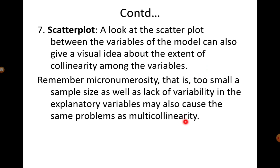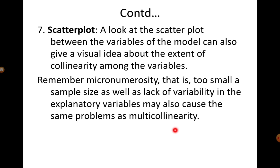To conclude this section: micronumerosity — having too small a sample size — and a lack of variability in the explanatory variables can also cause the very same problems that multicollinearity causes. These two conditions — lack of variability in X values and insufficient sample size — can mimic multicollinearity's effects. In econometrics, people do not give these enough attention, but they are worth keeping in mind when doing empirical research.